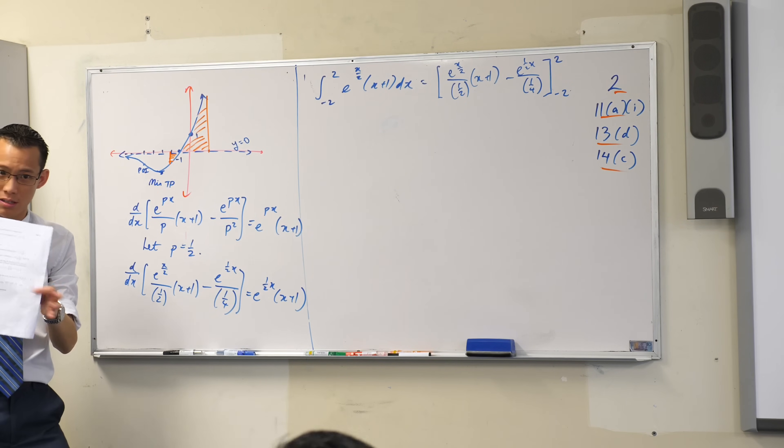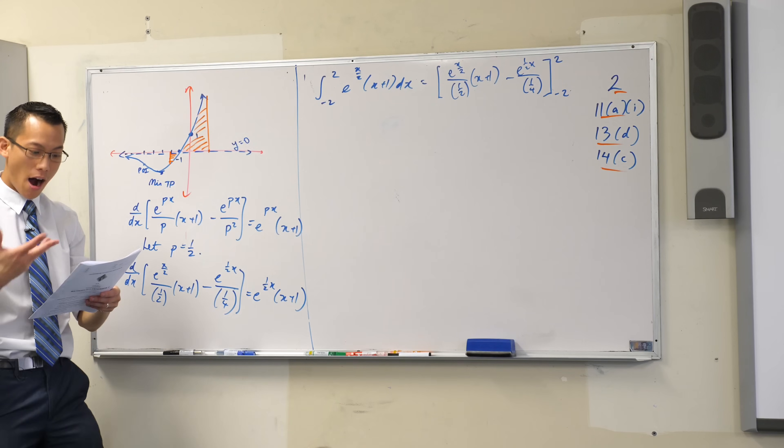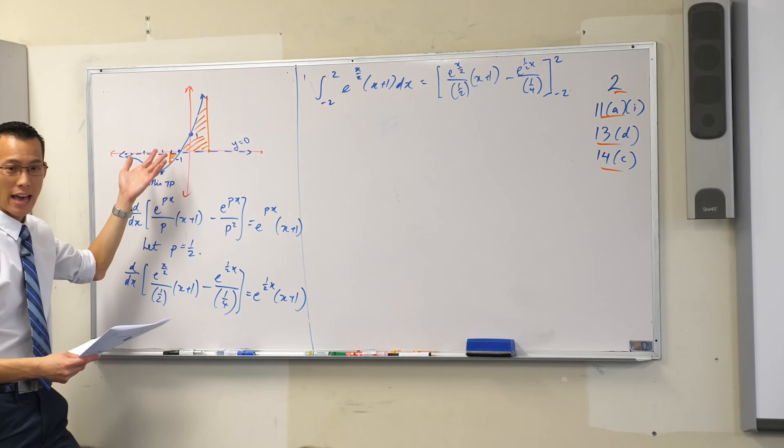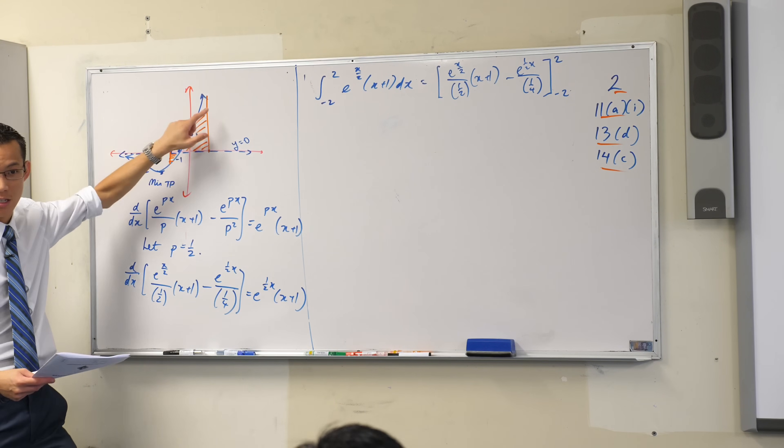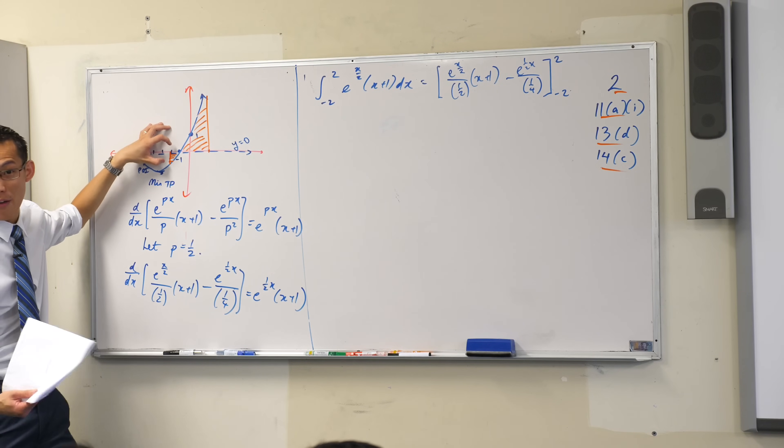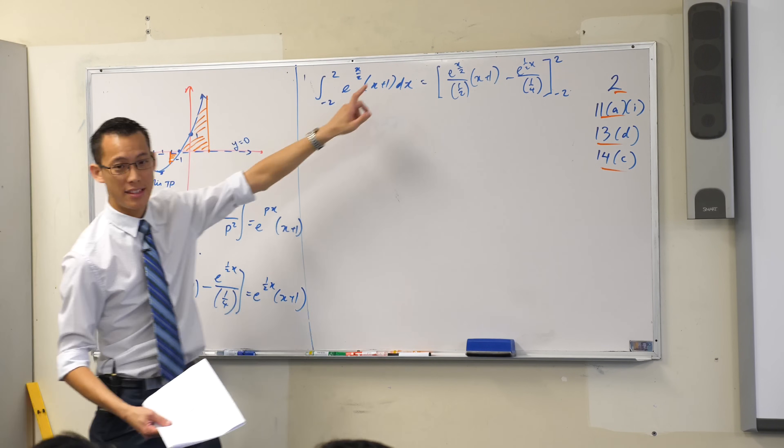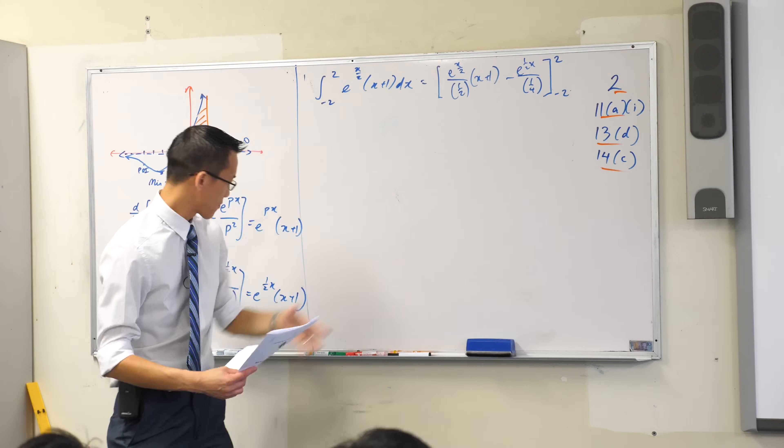But is that what the question actually wants us to do? It says, let R be this region. And it doesn't say treat this as negative, treat this as positive. We actually have to treat that like a positive area. So in fact, this isn't going to quite do it for me, right? In fact,